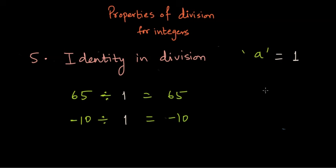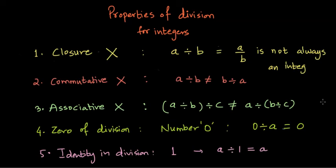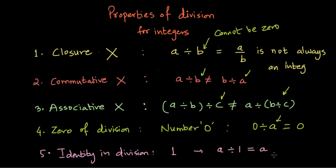Let's revise. First, closure property: division is not closed under the integer set, so a divided by b is not always an integer. Second, commutative property: a divided by b is not always equal to b divided by a. Third, associative property: (a ÷ b) ÷ c is not equal to a ÷ (b ÷ c). Fourth, zero of division is 0, since 0 divided by any integer is 0. Note that in all these properties, the divisor cannot be zero. Lastly, the identity in division is 1, since dividing any integer by 1 returns the same integer.